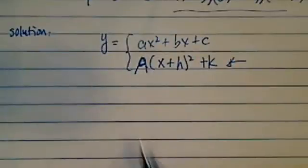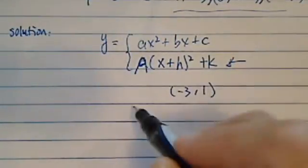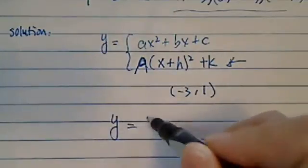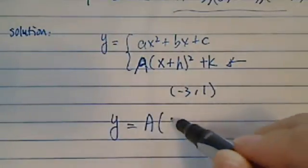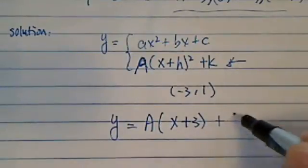Given the vertex form, we're given that vertex is minus 3 and positive 1, so our equation will be some coefficient that we don't know, and then x plus 3 over here, plus 1.